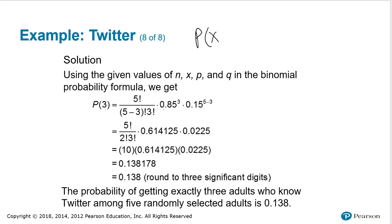If we think again about that formula, remember it's p of x is equal to n factorial over n minus x factorial, x factorial times p to the x times q to the n minus x.